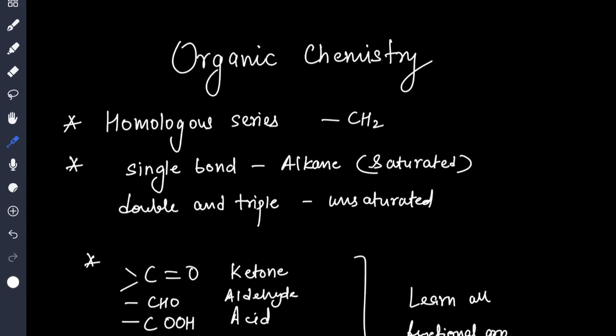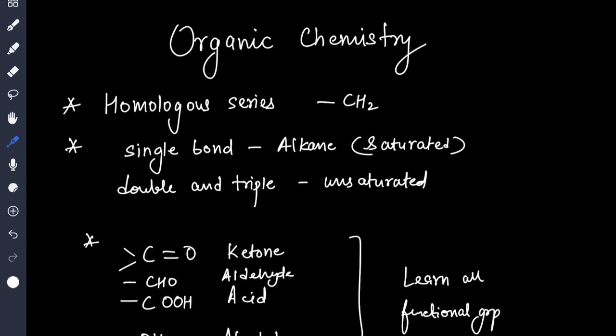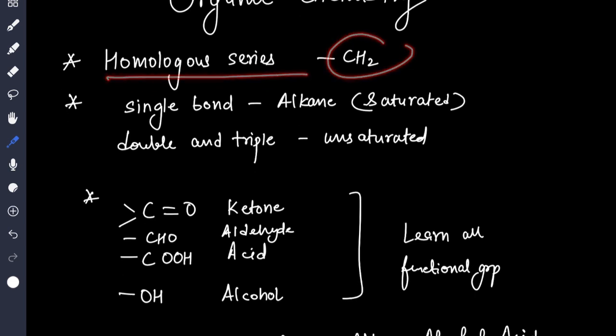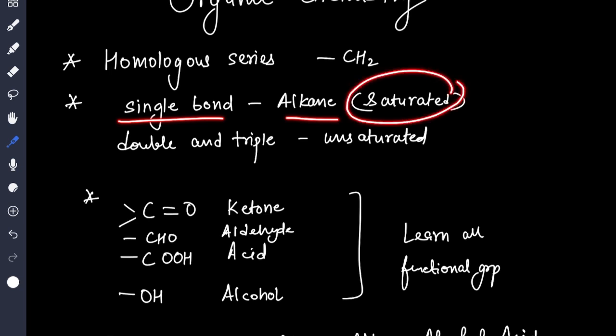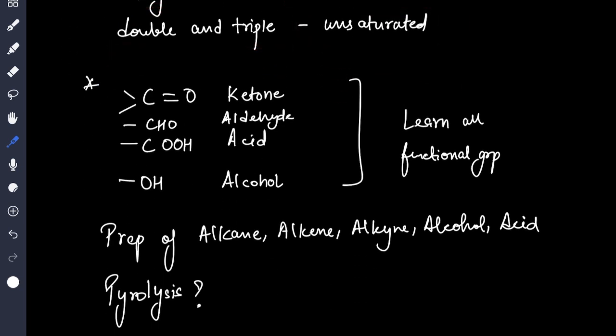Then we come to organic chemistry. What is homologous series? Then single bond, double bond, triple bond. Single bond means alkane which is saturated, double bond and triple bond are unsaturated.